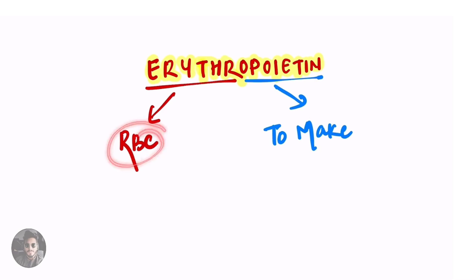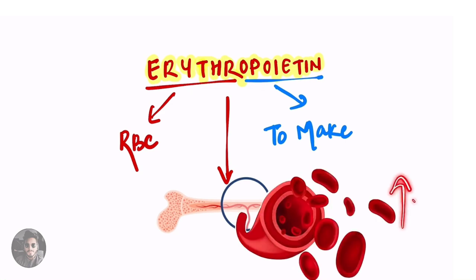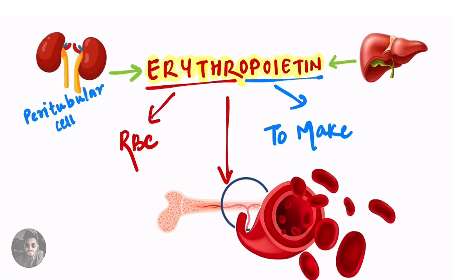Erythro means RBC and poietin means to make, hence the hormone erythropoietin acts on bone marrow and increases RBC production. Erythropoietin is majorly synthesized by kidney, by peritubular cells and a very little amount by liver.